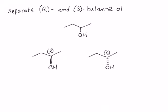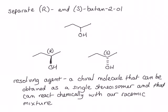If we have a mixture of the R and S enantiomers, a racemic mixture, which is one to one, we can react this mixture with another chiral molecule that is able to be obtained as a single stereoisomer. This is called a resolving agent. Oftentimes, resolving agents are obtained from biological sources. The one that we're going to use in this example is called tartaric acid. The RR tartaric acid can be obtained from wine.